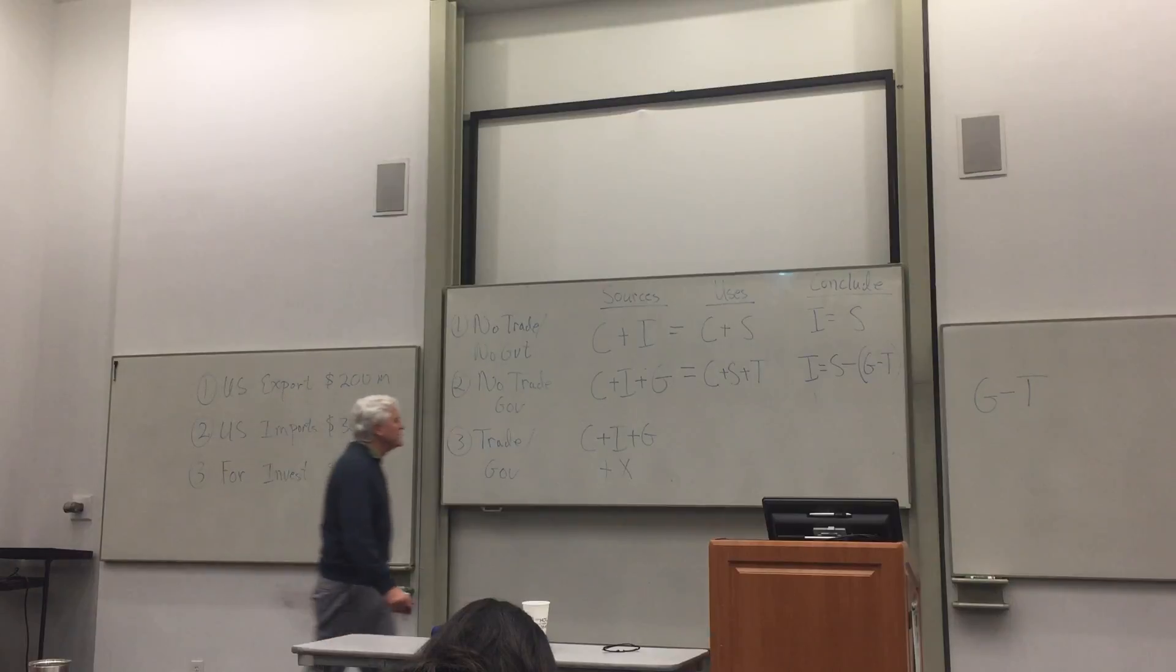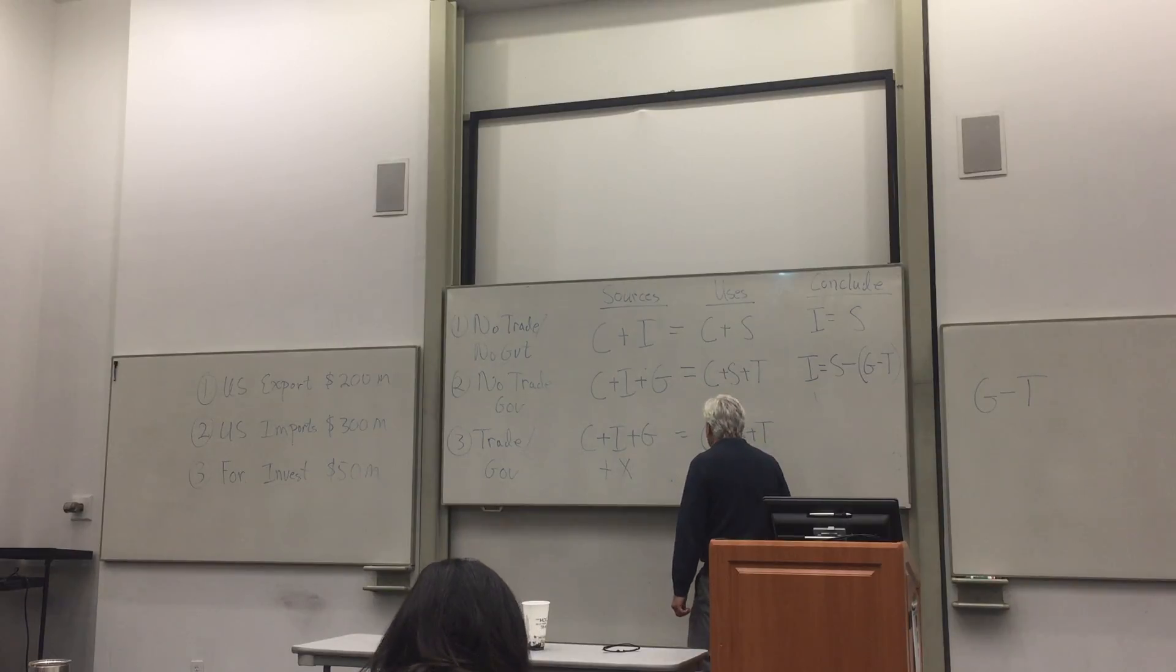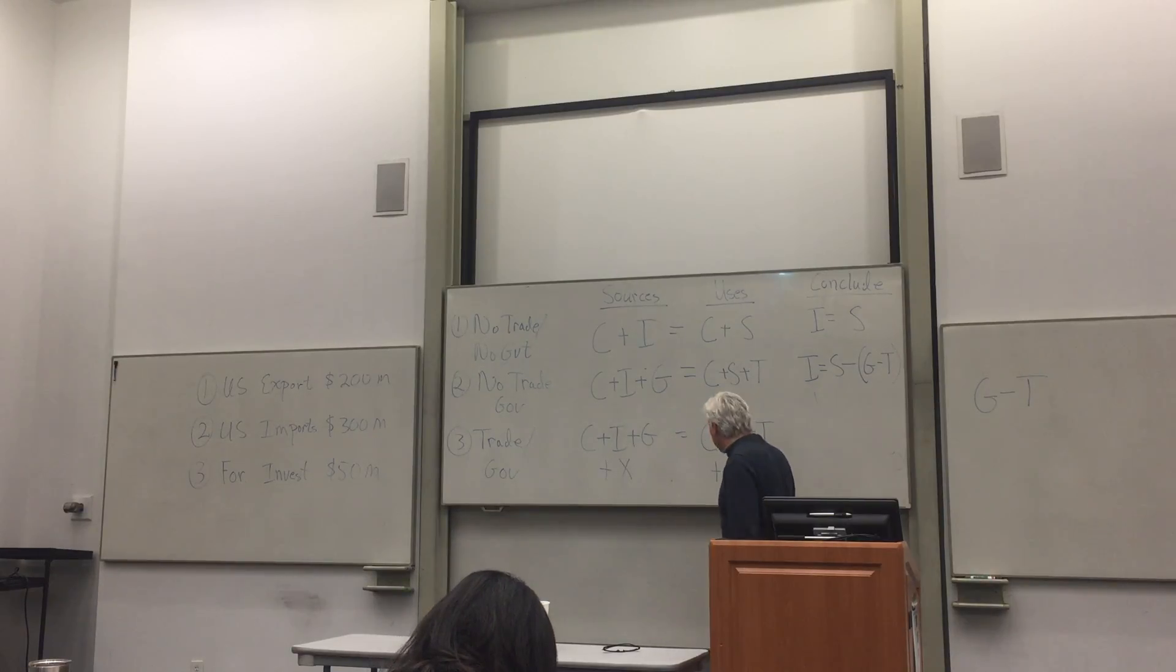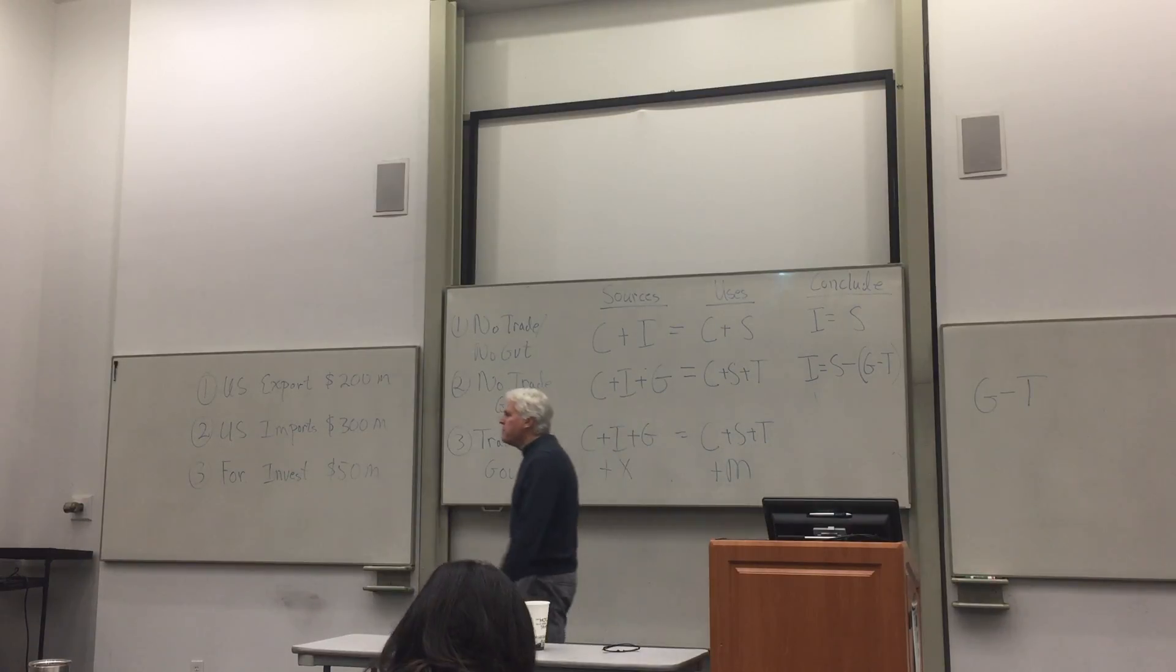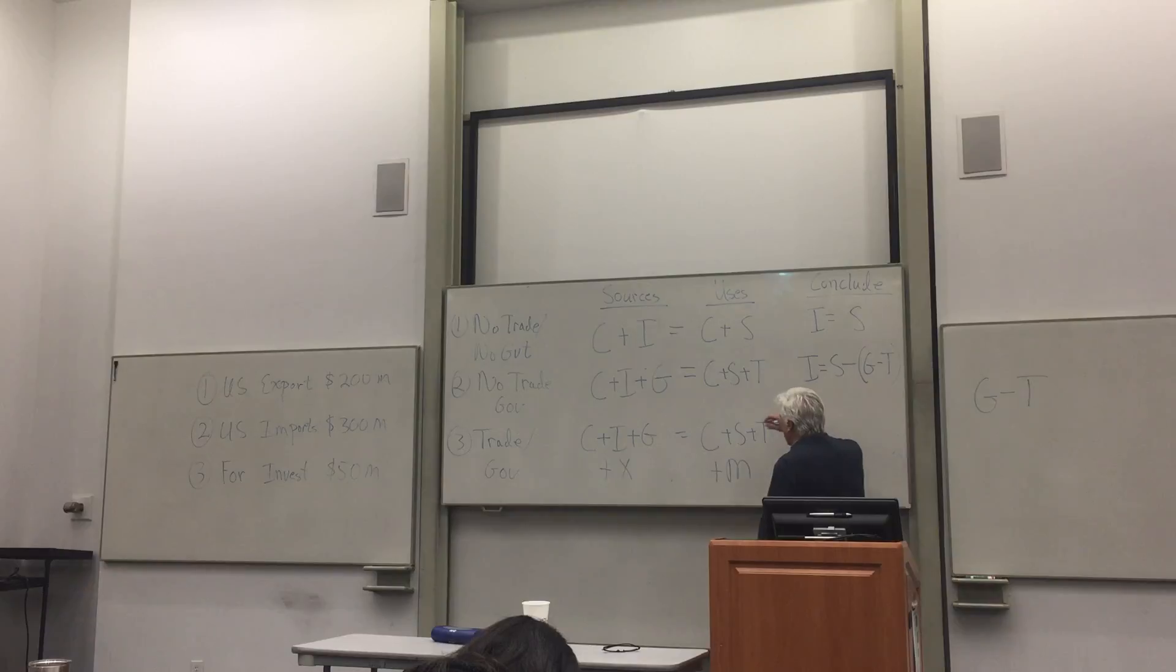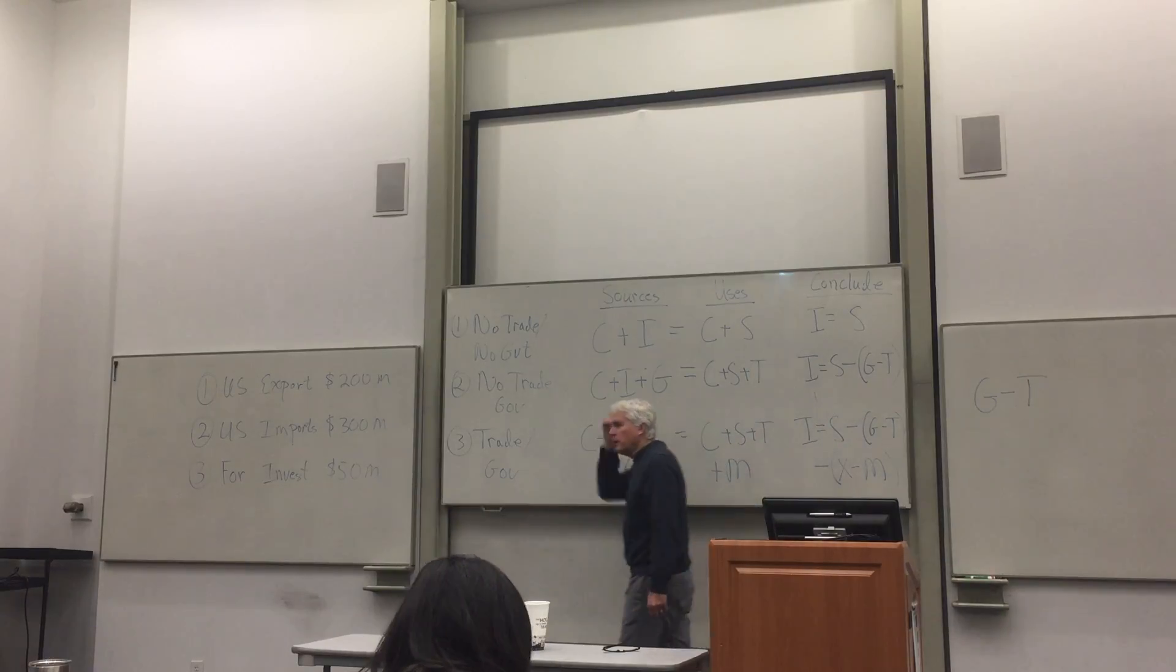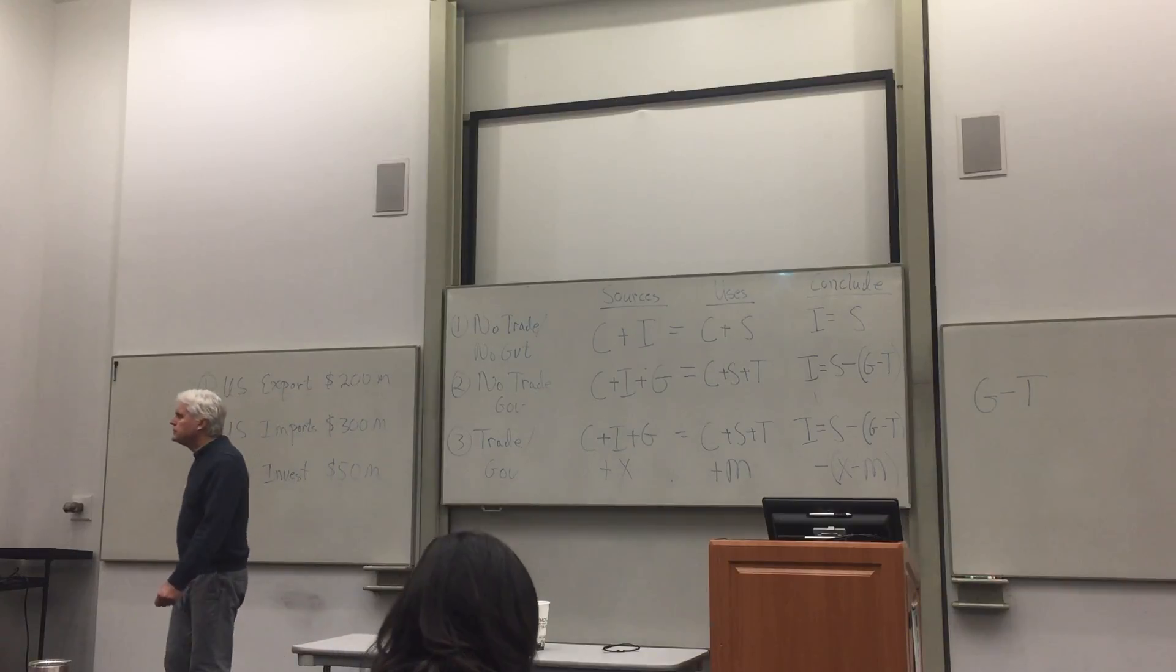All right, what about uses of funds? Well, the same story, you can buy consumer goods, you can save, you can pay your taxes, but now you have the opportunity to import. So, M means import. And what's the conclusion? Well, the conclusion here is that in a world where we can trade, the level of investment is equal to the level of savings minus the government budget deficit, but now we're going to subtract out one more thing, minus the difference between imports and exports.